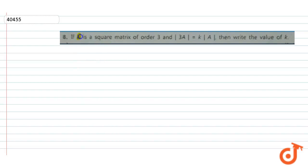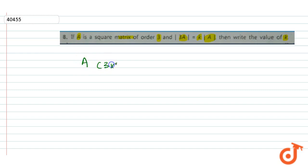The question is: matrix A is a square matrix of order 3, and determinant of 3A equals k into determinant of A. हमें यहाँ पर k की value निकालनी है। हमें given है कि A matrix एक 3×3 matrix है और det(3A) = k·det(A).